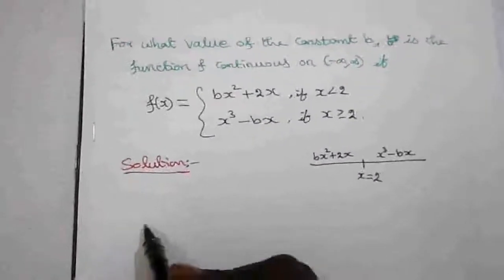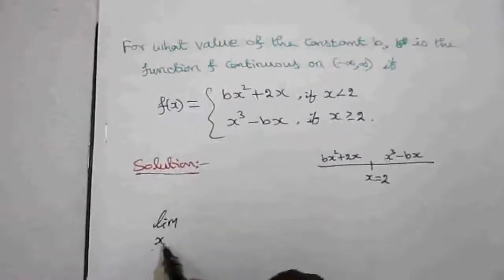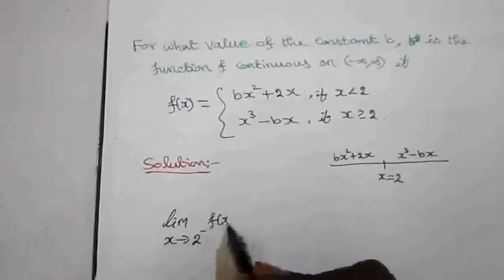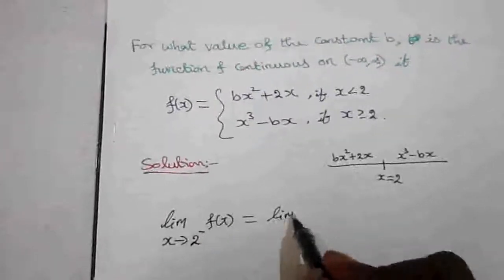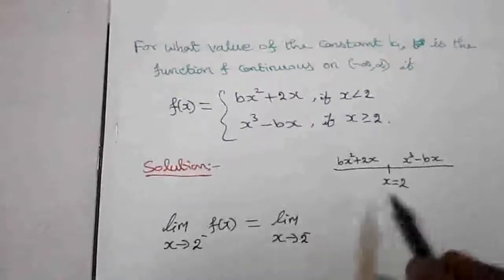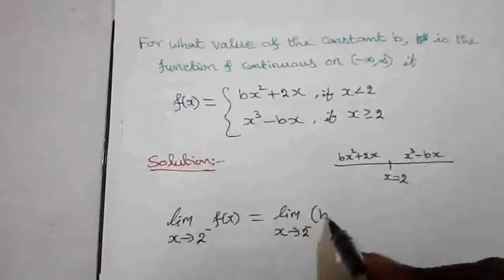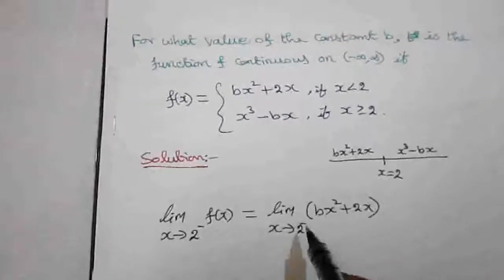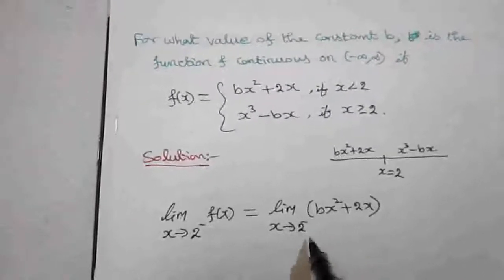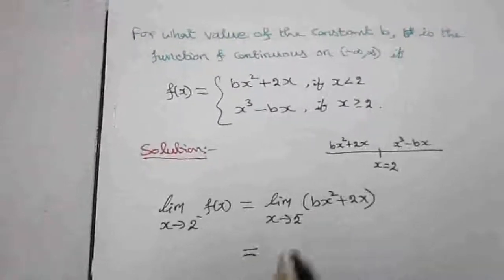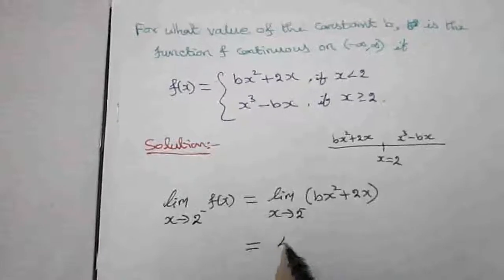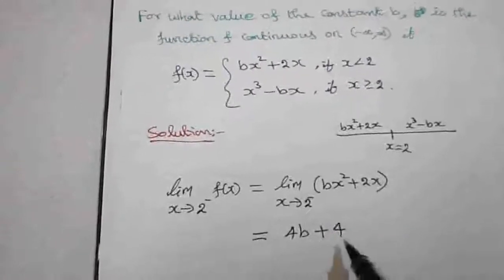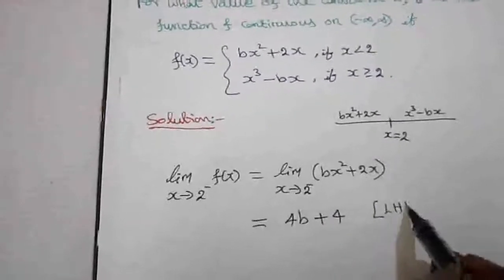Finding the left-hand limit: the limit as x tends to 2 minus of f(x) equals the limit as x tends to 2 minus of the left-hand function bx squared plus 2x. Substituting x equals 2: 2 squared is 4, giving 4b, and 2 times 2 is 4. So the left-hand limit is 4b plus 4.